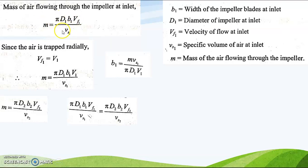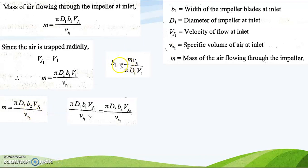The discharge equation is Q equals π × D1 × b1 × V_f1. If we divide discharge by specific volume we get the mass flow rate. Since the same mass of air passes at both the inlet and outlet of the blades, we can equate: (π × D1 × b1 × V_f1) / v_s1 equals (π × D2 × b2 × V_f2) / v_s2, where v_s1 and v_s2 are the specific volumes of air at inlet and outlet. From the velocity triangle, V_f1 can be calculated using m × v_s / (π × D1 × b1).